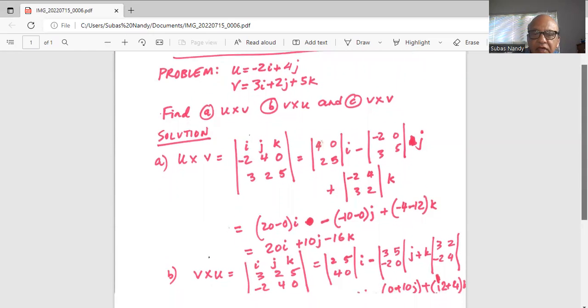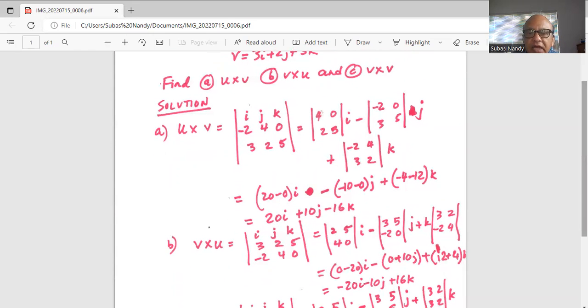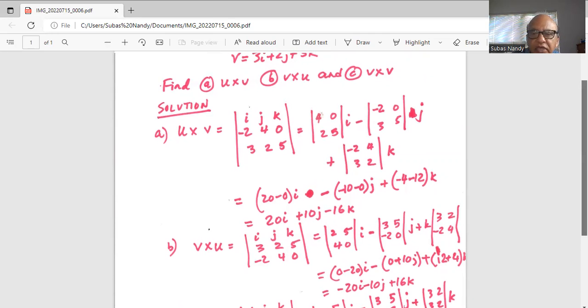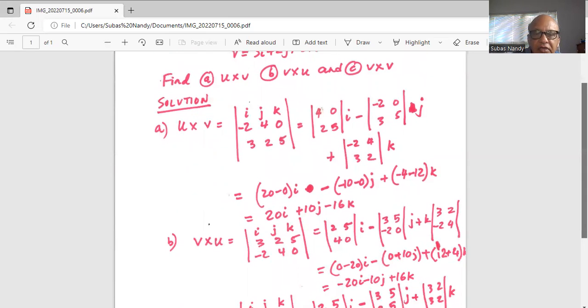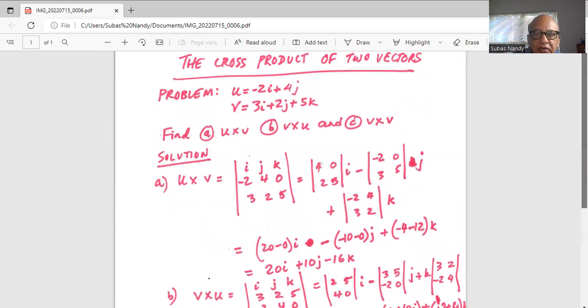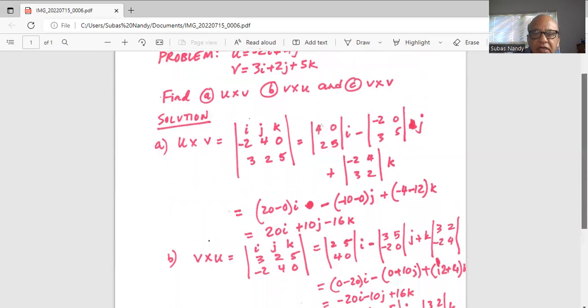Now we have to find v cross u, so we write i, j, k in the first row. In the second row, we write the coefficients of v, because v is first, which is 3, 2, and 5, and at the third row, we write the coefficients of u vector, which is -2, 4, and 0 for k.